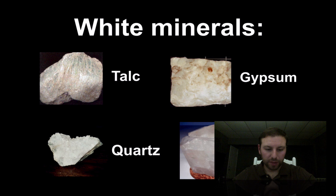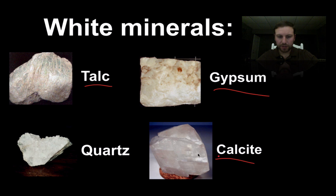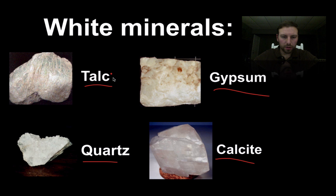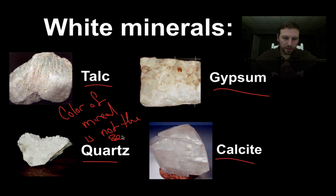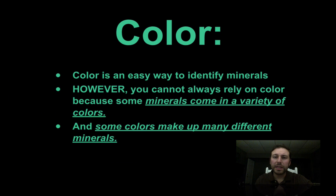Here are white minerals — notice that we have lots of minerals that are white: talc, gypsum (which makes up that drywall or wallboard I mentioned earlier), calcite, and quartz — all white minerals. So if you're going to identify a mineral on the basis of color alone, you may run into issues. Color is the easiest way to identify minerals, but it is not the best way. We cannot rely on color alone, as many different minerals share the same color.